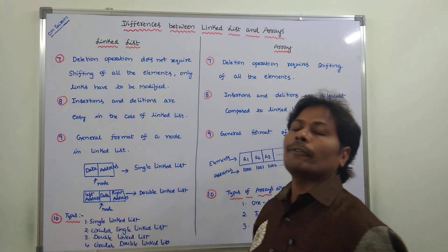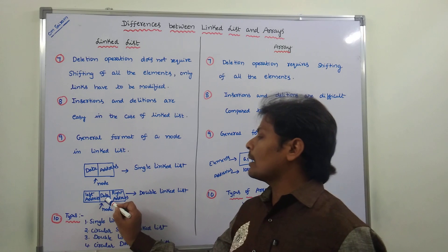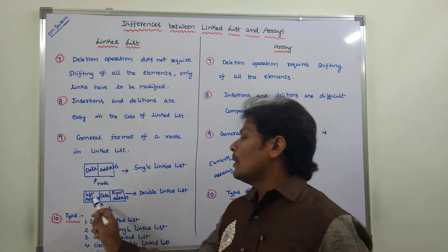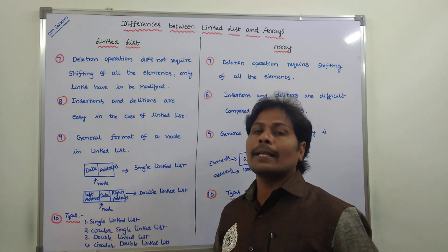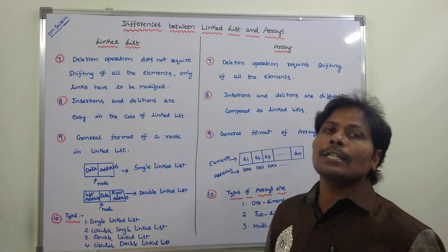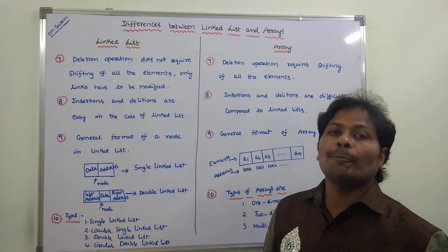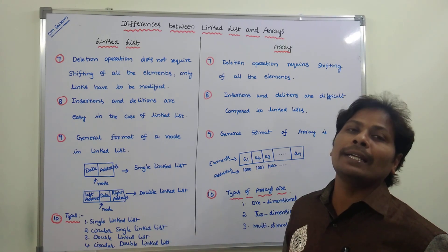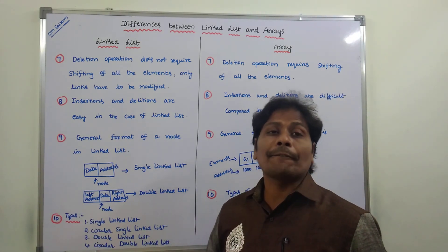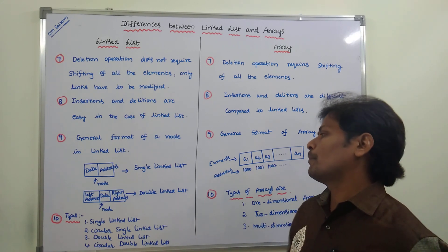This is the format of a node in a doubly linked list. It contains three parts — the middle part is the data part which contains the data element. The left side part is the left address, which points to the address of the previous element. The right side part is the right address, which points to the address of the next element in the list.